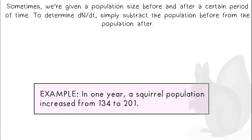Sometimes we're given a population size before and after a certain period of time. To determine dN over dt, simply subtract the population before from the population after.